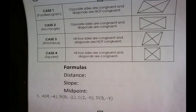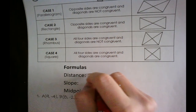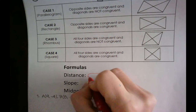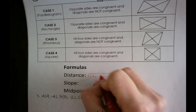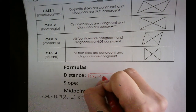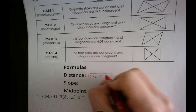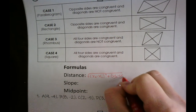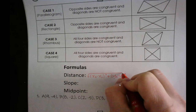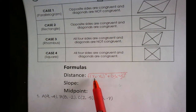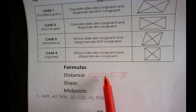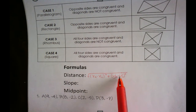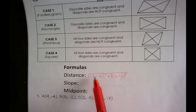We're going to use our distance formula. Remember that is the square root of (x₂ minus x₁) squared plus (y₂ minus y₁) squared. The x's and y's come from the points that are given.